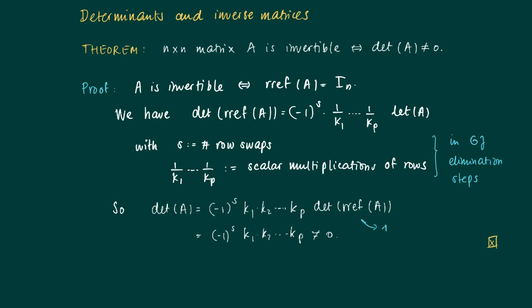But we have one thing in Gauss-Jordan elimination steps: we were only allowed to multiply by Ki if Ki were non-zero. So this is a proof of the theorem.